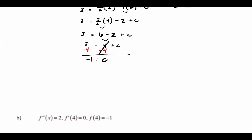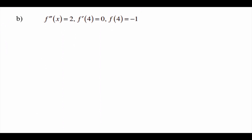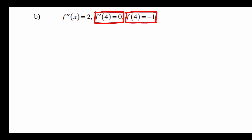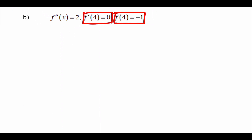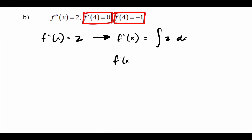For letter b, we start a bit lower: they've given us the second derivative. We're also given information about the first derivative and the original function, but we have to start in the basement — the second derivative — and work our way up. First step: find the first derivative by taking the anti-derivative of 2, which gives 2x plus C.